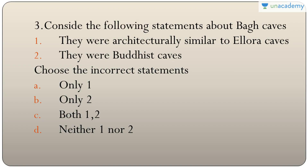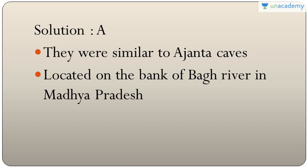Question three: statements about Bagh caves — they were architecturally similar to Ellora caves, and they were Buddhist caves. The first statement is incorrect because Bagh caves are similar to Ajanta caves, not Ellora caves. They are Buddhist caves, so the answer is A — only one (incorrect statement). Bagh caves are located on the banks of the Bagh river in Madhya Pradesh.